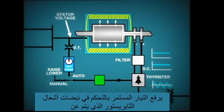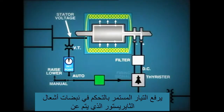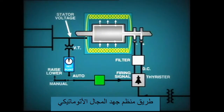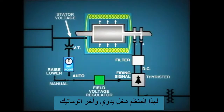The level of DC voltage can be adjusted by controlling the firing of a thyristor-type rectifier. The firing circuit is controlled by the field voltage regulator. This regulator has two inputs: manual and auto.